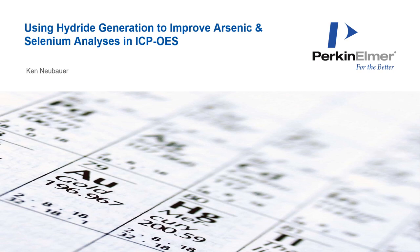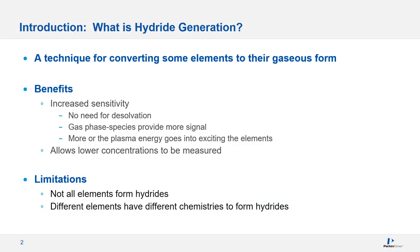Today I'll be talking about how we use hydride generation to improve arsenic and selenium analyses in ICP OES. Hydride generation is a technique for converting some elements into a gaseous form. The main benefit is increased sensitivity — there's no need for desolvation. With conventional aqueous nebulization, the plasma energy must first desolvate the droplets; with hydride generation, the gaseous element goes directly into the plasma, so all the plasma energy goes into exciting the elements, allowing us to measure lower concentrations.